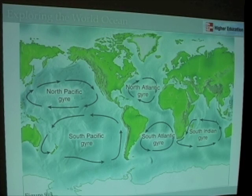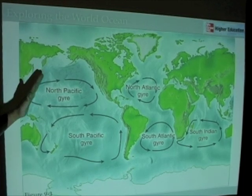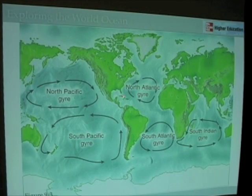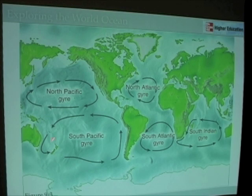By the same token, we can define western boundary currents — currents running along the western boundaries of the oceanic gyres. For example, a western boundary current in the North Pacific that runs along Japan, a western boundary current that runs along the east coast of the United States and Canada, a western boundary current along the east coast of South America, and a western boundary current along the east coast of Australia.